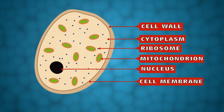They contain an organized nucleus with genetic material, a cell membrane around the cytoplasm, ribosomes for protein synthesis, and mitochondria for cellular respiration.